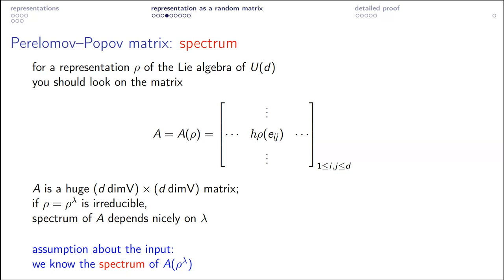The moral lesson is that there is a convenient alternative way to encode information about the weight — not as λ itself, but as the spectrum of this Perelomov-Popov matrix. In fact, I promised to explain what the blue assumption means: that λ times ℏ converges to some limit. Now I can tell you precisely — I want exactly that the spectrum of matrix A converges to some nice probability distribution on the real line, such as the Wigner distribution or the Marchenko-Pastur distribution.